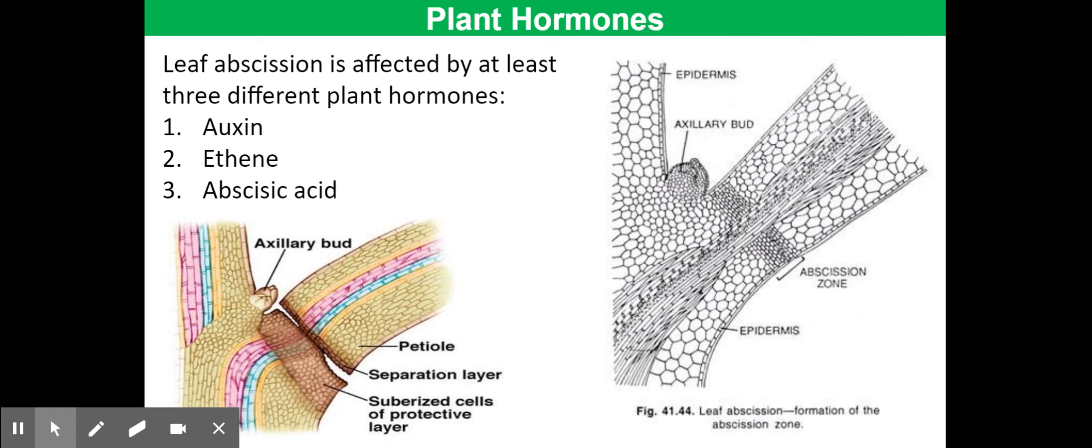There are three key hormones that are important in this process of leaf abscission. Abscisic acid, we've actually come across already. It was originally given its name because it was thought to have a role in leaf abscission. And in some trees, some plants, some species, it does appear to.